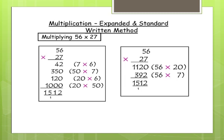To find out the final answer, add these answers together. 42 plus 350 plus 120 plus 1000. It is 1512.